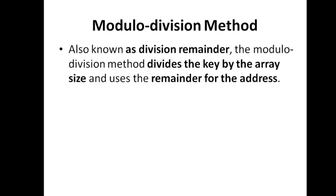The next technique is the modular division method. The idea is: divide the key by the array size and use the remainder as the address. This is commonly used when the key size is larger than the address size — you need to compress the key range to fit within the number of address digits. The formula is: address = key mod list_size.